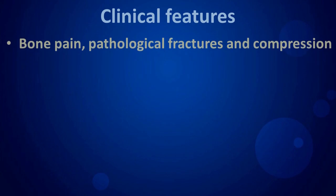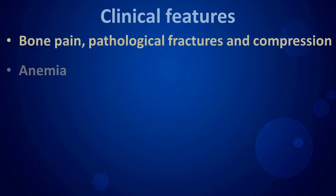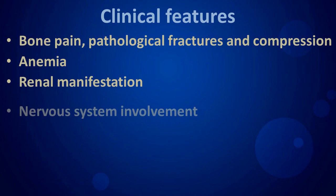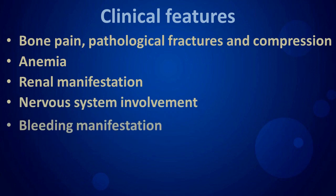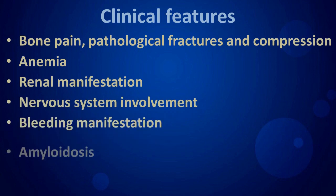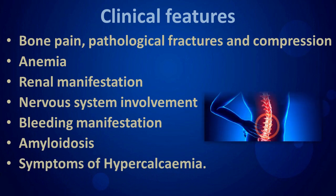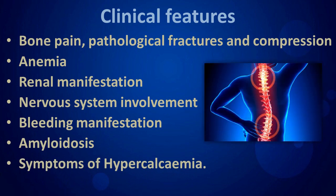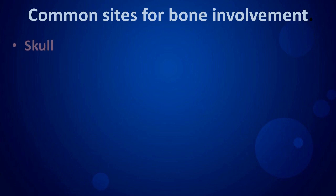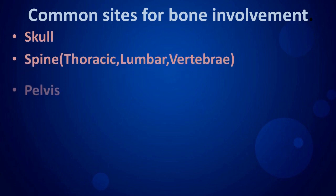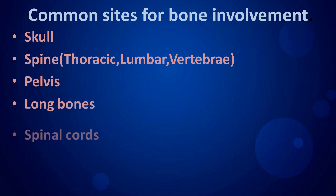Clinical features include bone pain, pathological fractures and compression, anaemia, renal manifestations, nervous system involvement, bleeding manifestations, amyloidosis, and symptoms of hypercalcaemia. Common sites for bone involvement are the skull, spine, pelvis, long bones, and spinal cord.